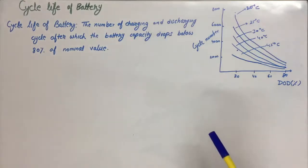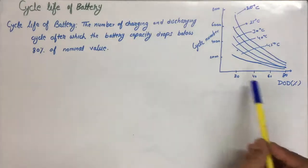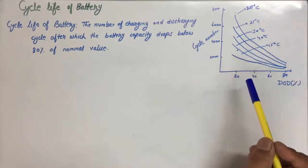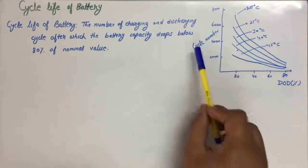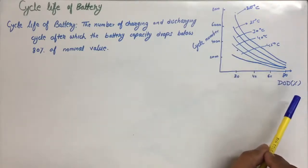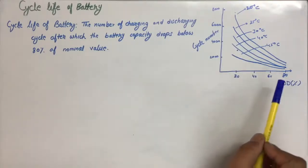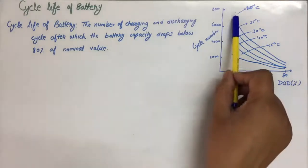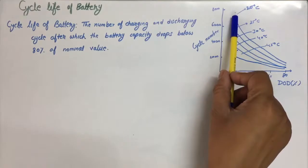If we plot the characteristics between the cycle number and DOD at any particular temperature, then we find that the cycle life depends non-linearly with the DOD. The smaller is the DOD, higher is the cycle life.